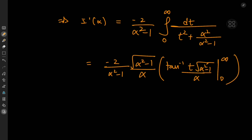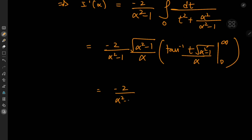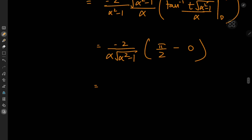Evaluating this gives -2/(alpha² - 1) times sqrt(alpha² - 1)/alpha times the inverse tangent of t times sqrt(alpha² - 1)/alpha, evaluated from 0 to infinity. As t approaches infinity, the inverse tangent approaches pi/2, and at t = 0 we get 0. Simplifying, dI/dα equals -pi divided by (alpha times the square root of alpha² - 1).